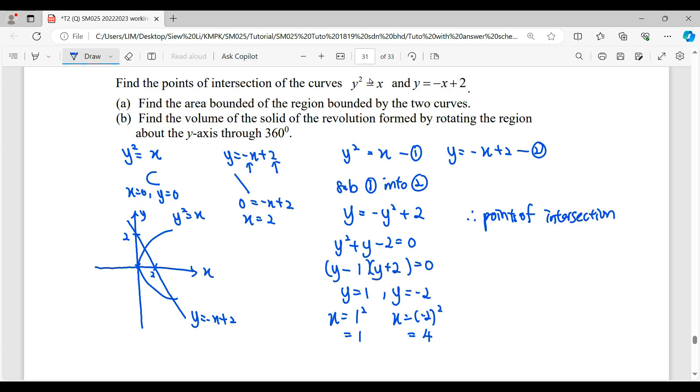So the points of intersection for these two curves, it will be (1,1) and (4,-2). So here will be our (1,1), and this one will be our (4,-2).